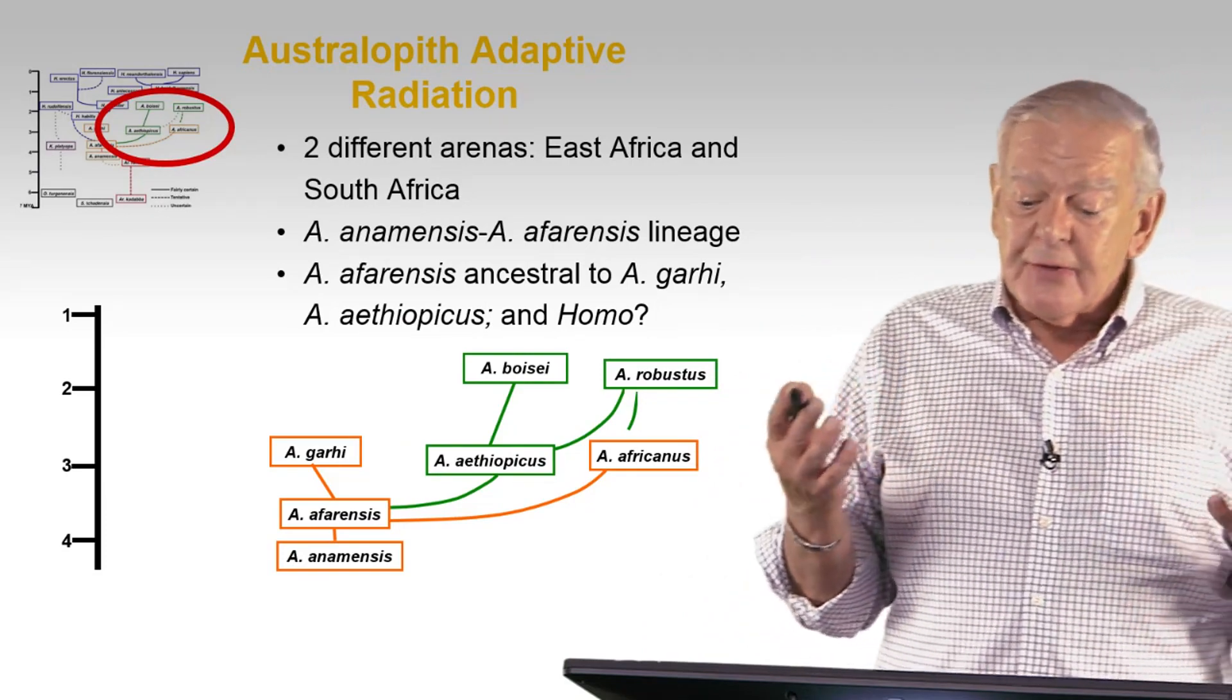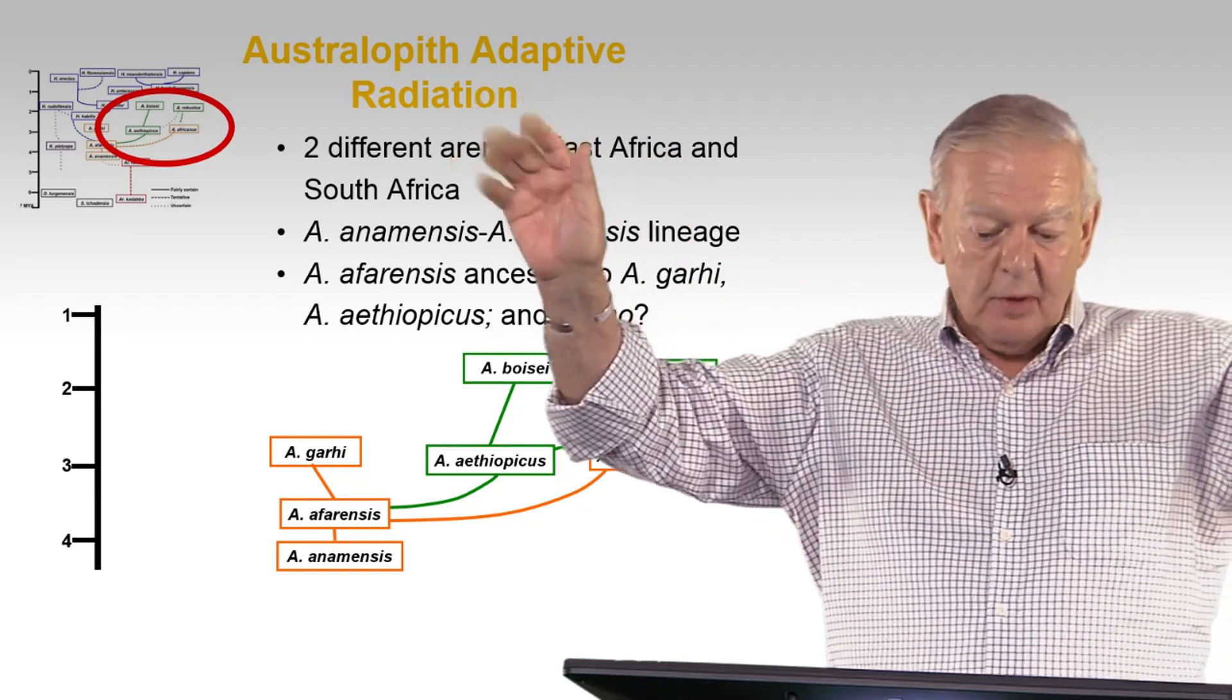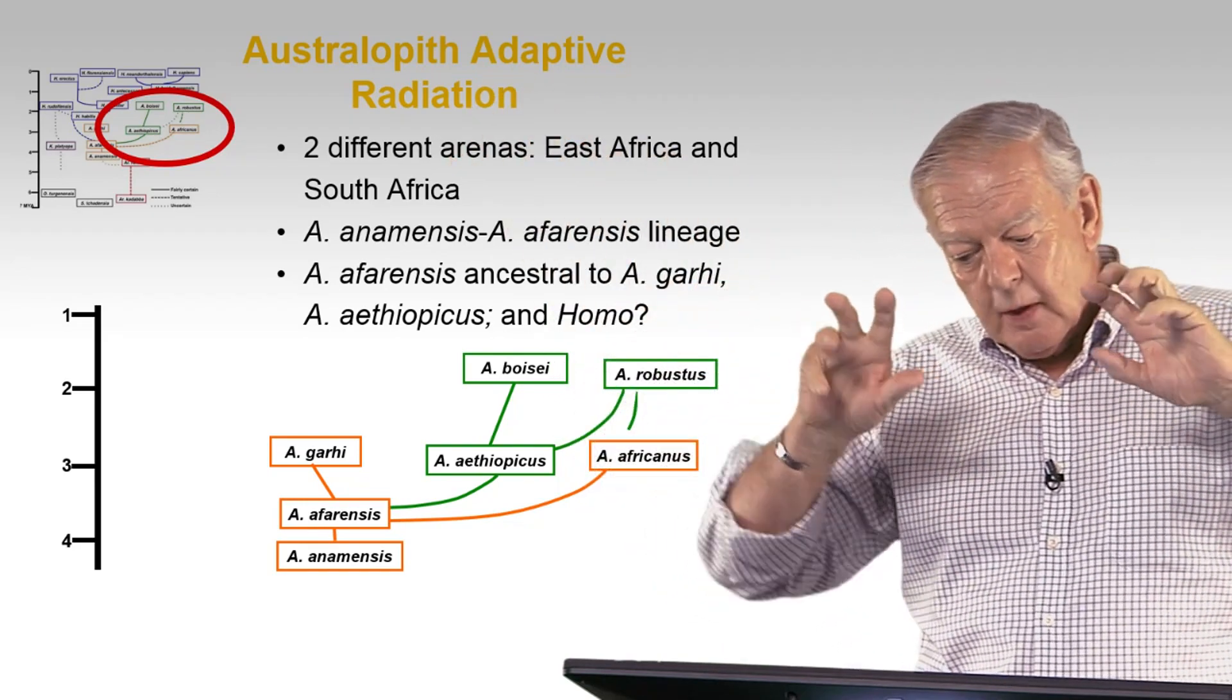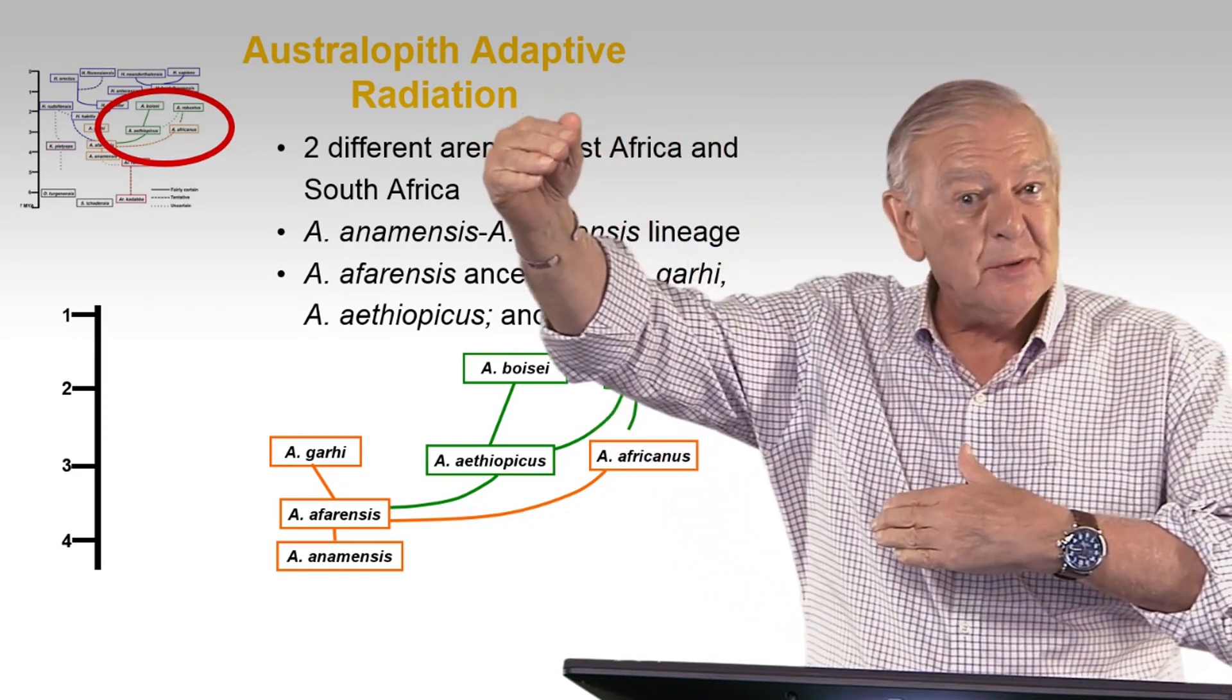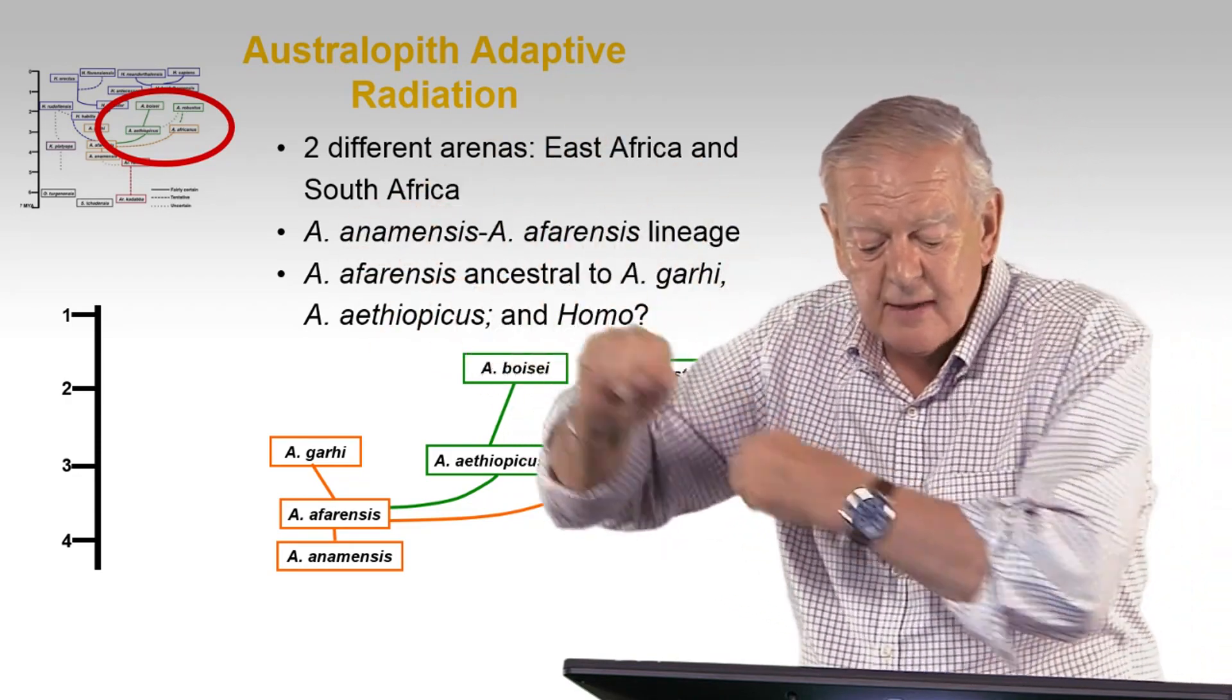Australopithecus, or Australopiths, as they're sometimes called, underwent an adaptive radiation. We all remember what that is. I think in two different arenas, one Eastern Africa and one in South Africa, because we don't find common species, do we? Robustus is only in South Africa, Boisei is only in East Africa, and so on.